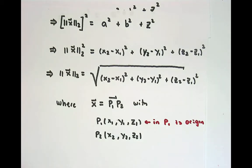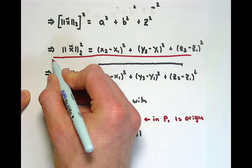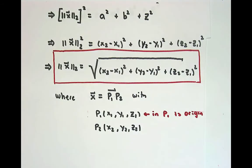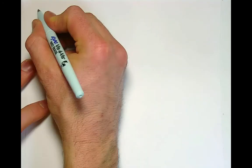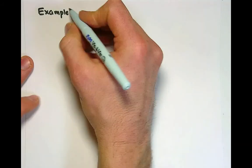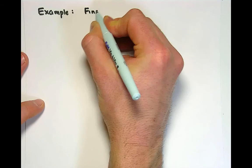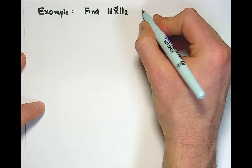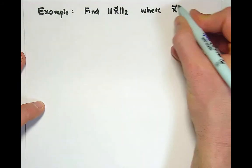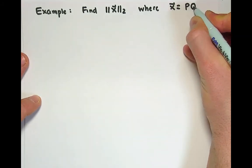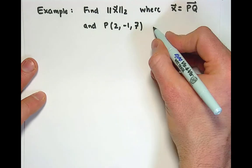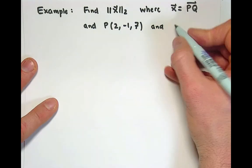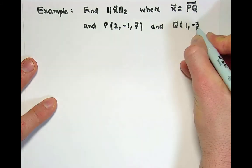We just derived this formula using the Pythagorean theorem. Let's take a look at an example of how to use this information to find distances. Please find the 2-norm — the length, the magnitude — of a vector x, where x is the vector that connects points P and Q. Here P is (2, −1, 7) and Q is (1, −3, 5).